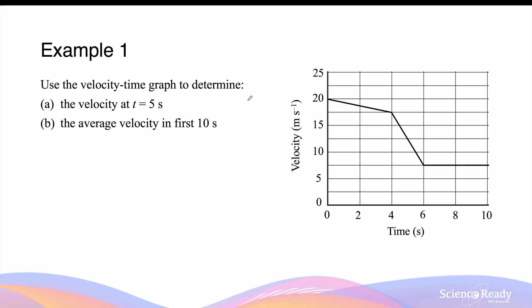Use the velocity-time graph to determine the velocity at 5 seconds. The instantaneous velocity at 5 seconds, according to the graph, is 12.5 meters per second.